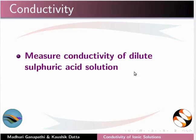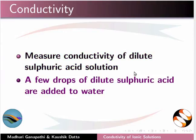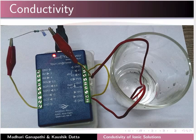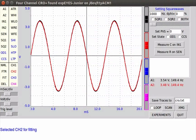Right click on CH1 to see voltages and phase difference values. Now we will measure conductivity of dilute sulfuric acid solution. A few drops of dilute sulfuric acid are added to water. Wires are dipped in the sulfuric acid solution. Observe that black and red traces are almost coinciding with each other. Conductivity of tap water has increased on adding a few drops of dilute sulfuric acid.